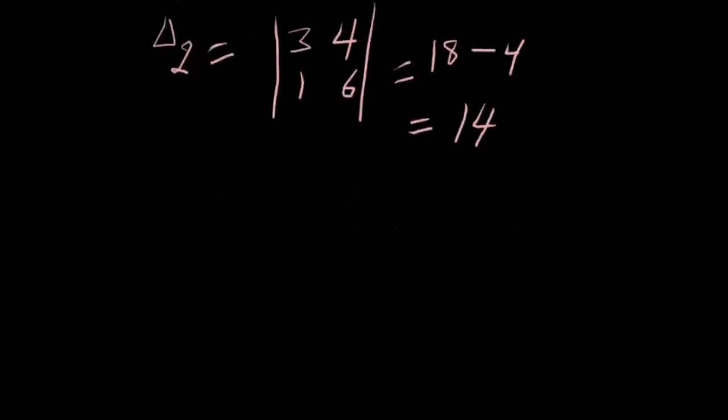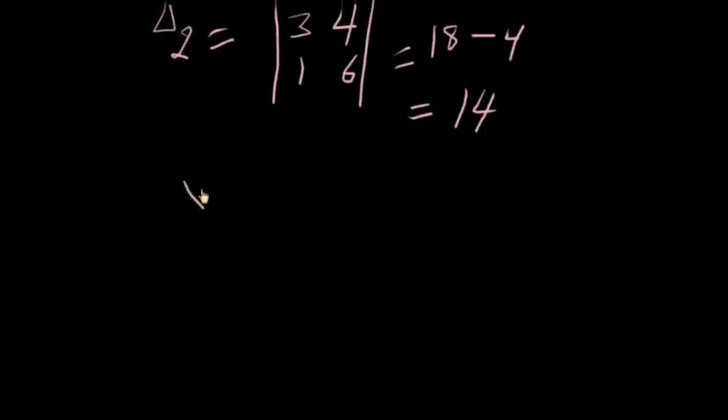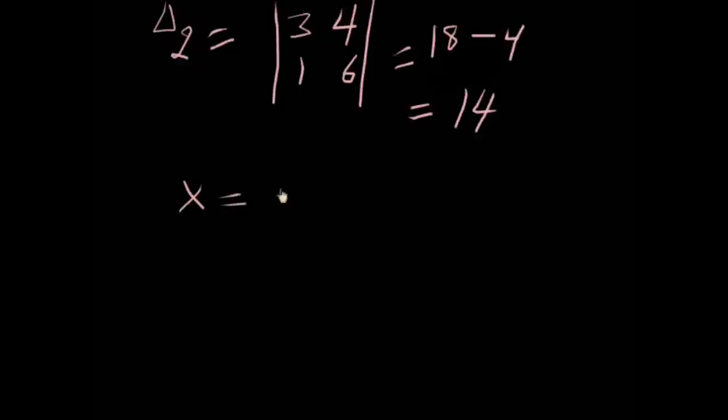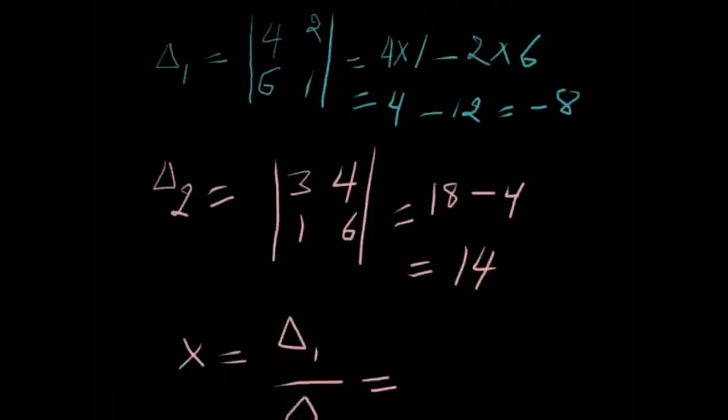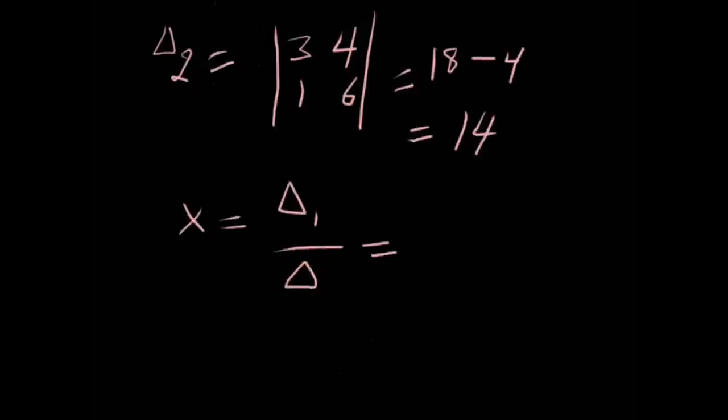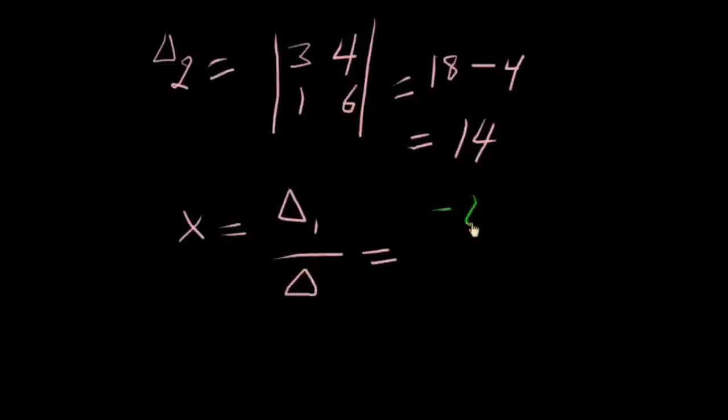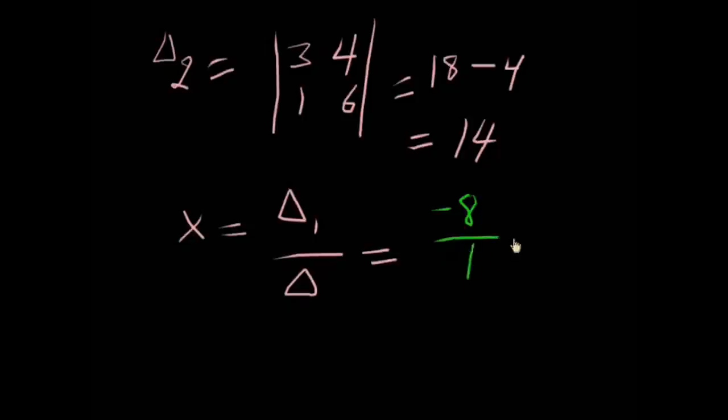Now the value of x will be delta one divided by delta, which is -8÷1. The value is... sorry, minus 8.